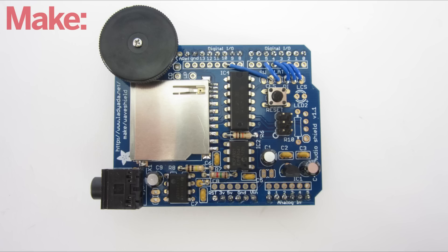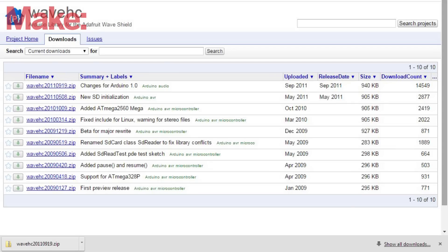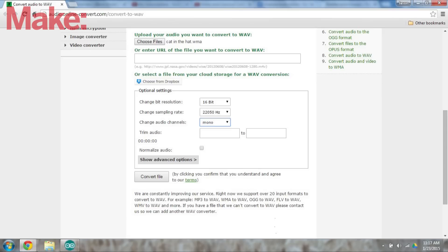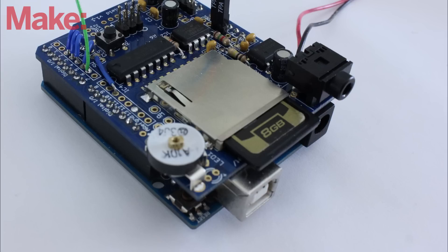To play the sounds, I'm using an Adafruit WaveShield. To set this up, you need to first download the WaveHC library and copy it into your Arduino Libraries directory. Then take your audio track and convert it into a 16-bit mono wave file with a 22 kHz sampling rate. Put this file on an SD card and insert it into the WaveShield.